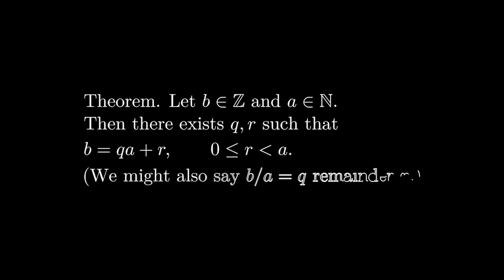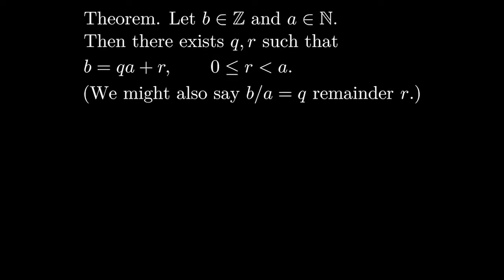Here's a theorem that's also an algorithm, and it actually is called the division algorithm. We're not going to prove this theorem now, but we will prove it later. Theorem: Let b be an integer, and let a be a natural number. Then there exists a unique pair of integers q and r that satisfy these two equations.